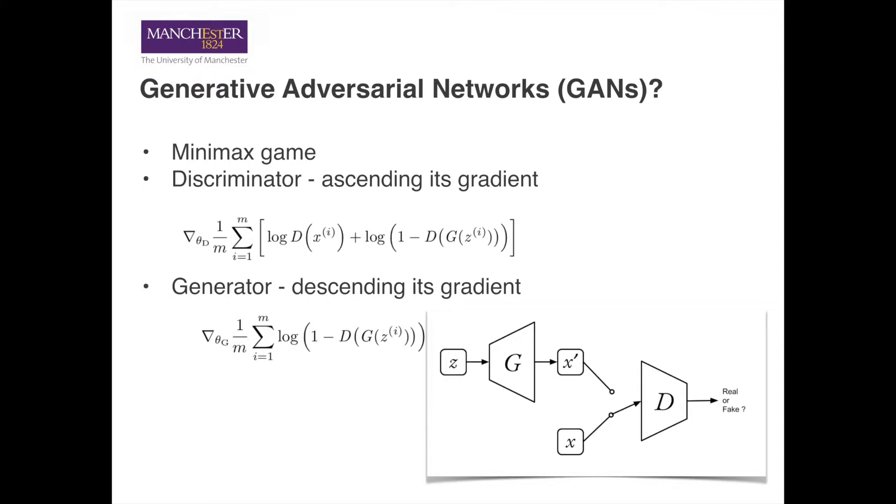To describe the model formally, we use a function G to represent the generator, which takes the random noise Z as input and produces X'.